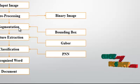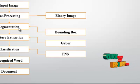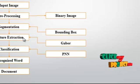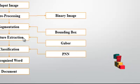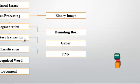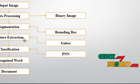Each and every letter is segmented using the bounding box. Then the segmented letter undergoes feature extraction. In the feature extraction step, we apply the Gabor filter. The Gabor filter extracts features from each and every letter present in the word.